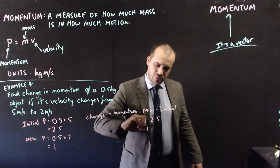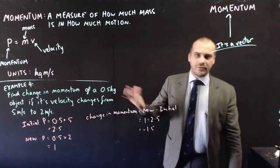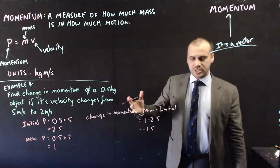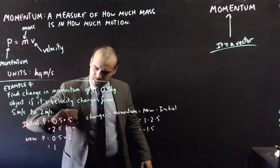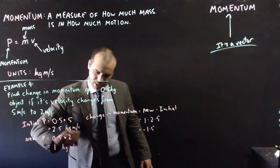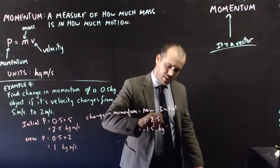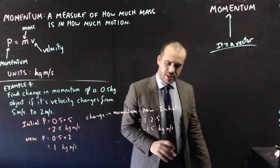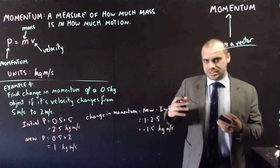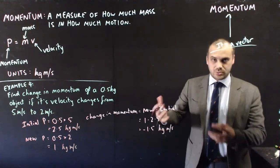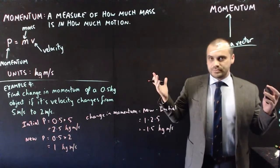Now, I haven't written any units here, but obviously all of these units are kilogram meters per second. This object is slowing down, but momentum tells us something about its mass as well. That's momentum.